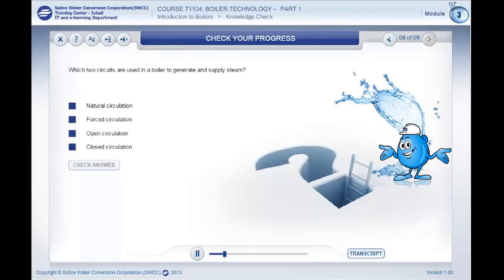Now that you know about boiler basics, try answering this question to check your knowledge. Which two circuits are used in a boiler to generate and supply steam? Select the correct options and click check answer. You have two attempts to get this right.